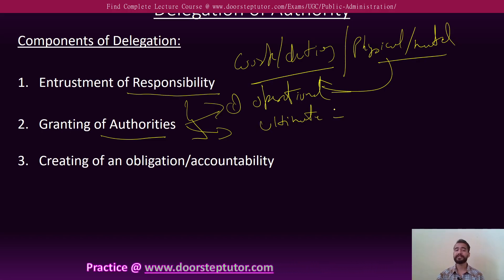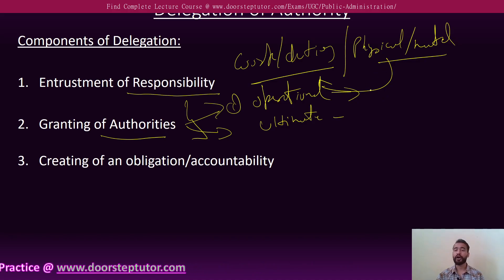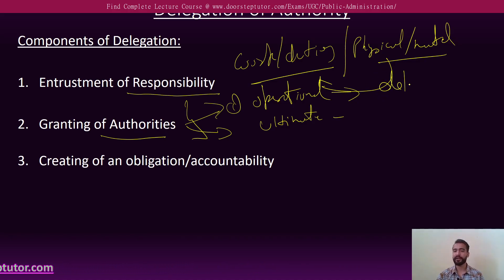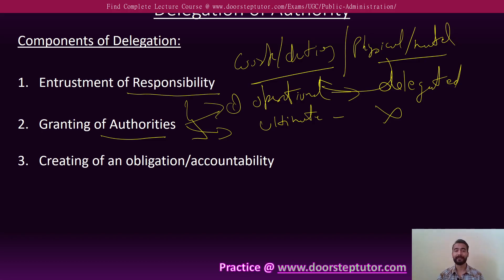The basic difference between the two authorities is that the operational authority can be delegated, while the ultimate authority cannot be delegated. So it is important for the supervisor or the delegator to know what kind of authority should be delegated.